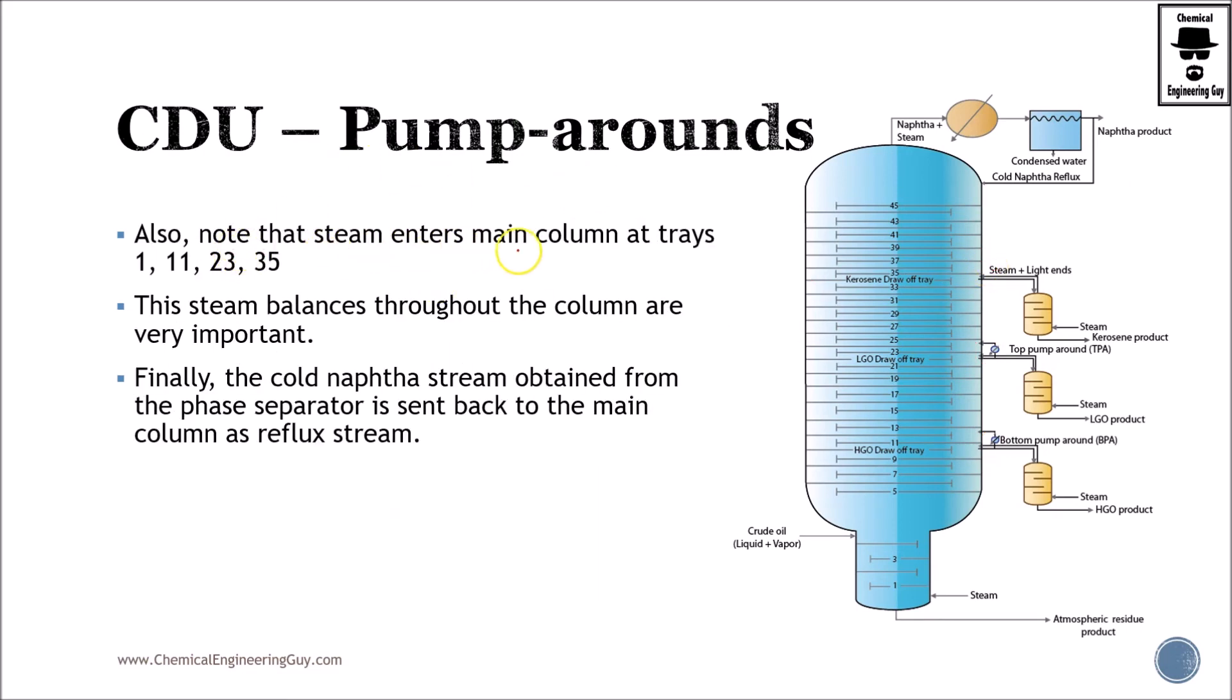Note that the steam enters main column at number 1, which is here, steam number 11, so this is the part right here, 23 and 35. So this is important to ensure that steam is entering here. This steam is balancing the whole column, balances both heat and mass or volume.